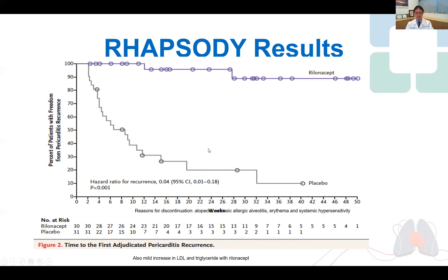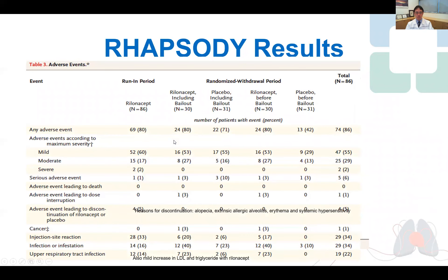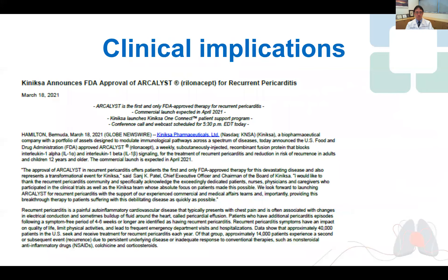Rilonacept led to a substantial reduction in the rates of recurrent pericarditis with a hazard ratio of 0.04. It also leads to much improved symptoms and dampening of inflammatory markers, with a very good safety profile — only slightly higher rates of injection site reactions and infection compared to placebo, none of which were serious or fatal. As a result, FDA approved Rilonacept for this indication in March 2021.